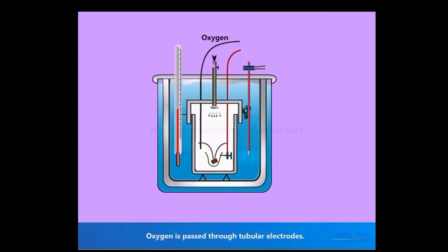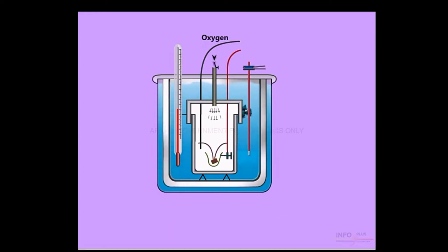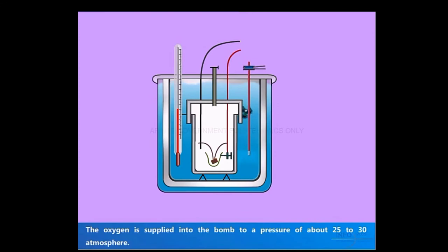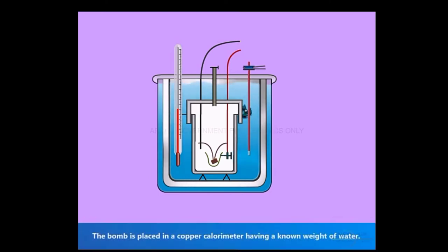Oxygen is passed through tubular electrodes. The oxygen is supplied into the Bomb to a pressure of about 25 to 30 Atmosphere. The Bomb is placed in a Copper Calorimeter having a known weight of water.